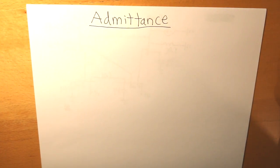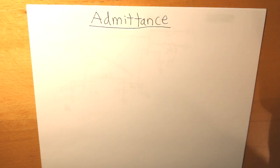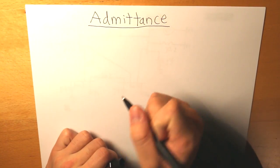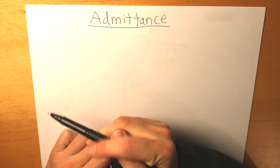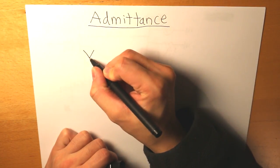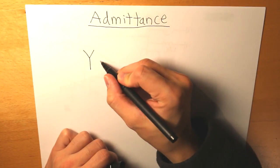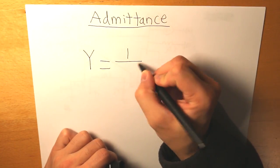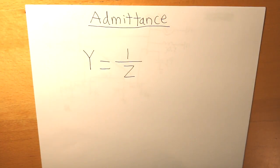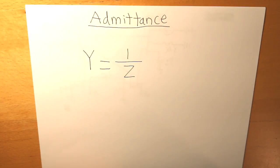Hello everyone, it's been a while again, but in this video we are going to be talking about admittance. Admittance is basically the inverse of impedance, so admittance stands for the symbol capital letter Y, which equals the inverse of impedance. This is the basis of what admittance is.